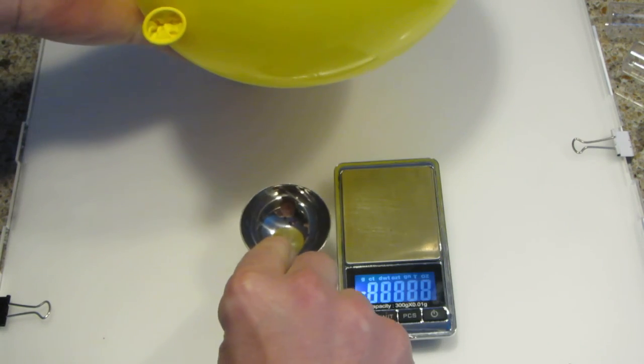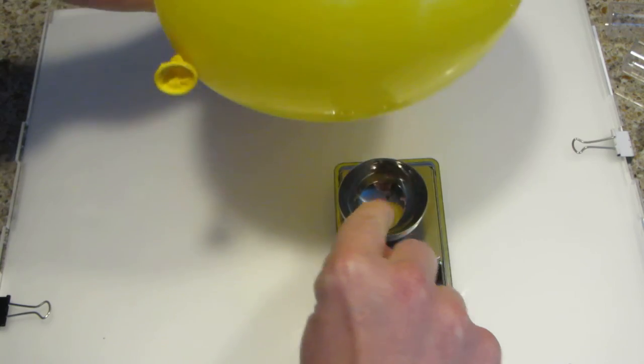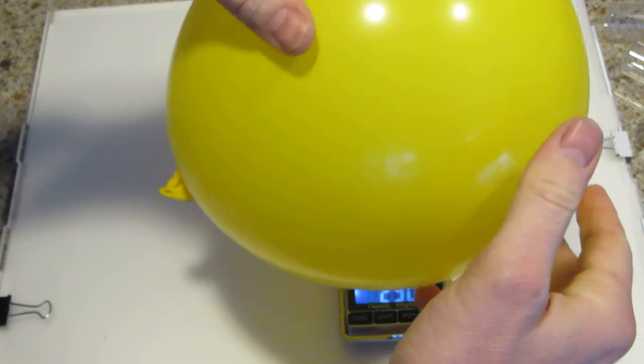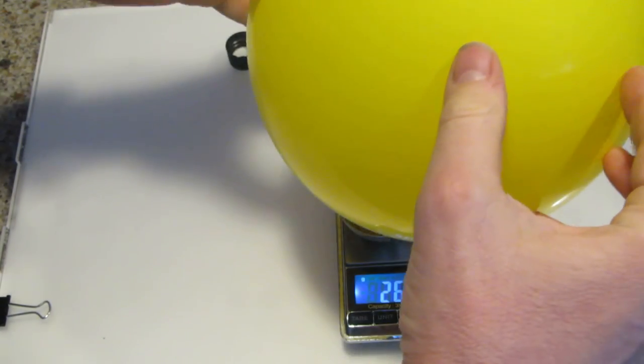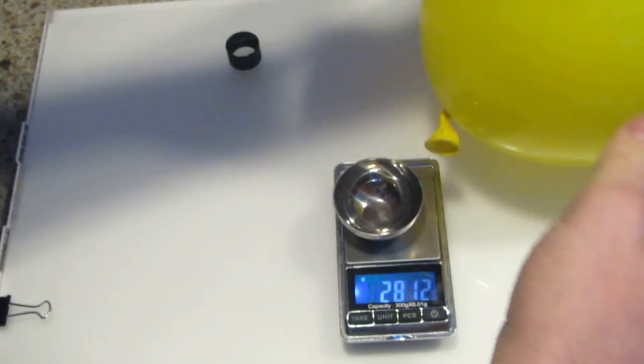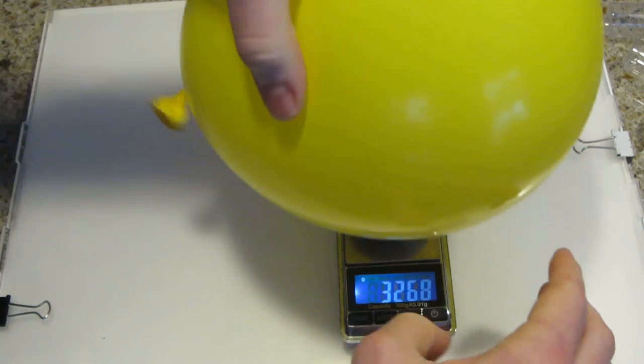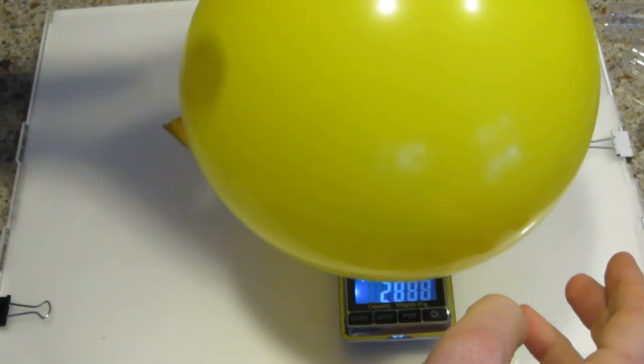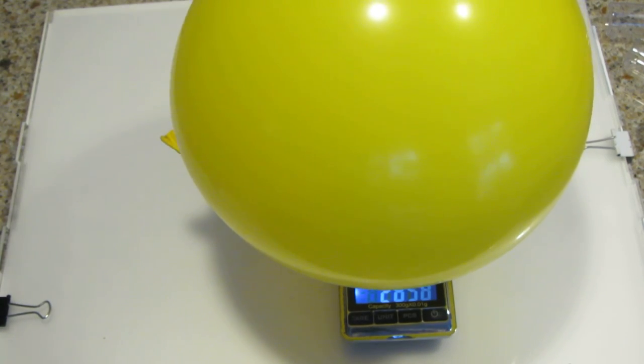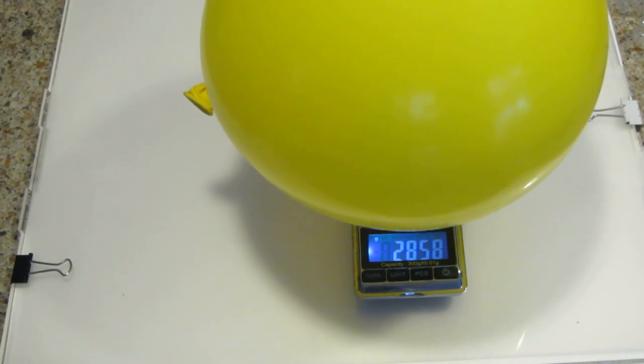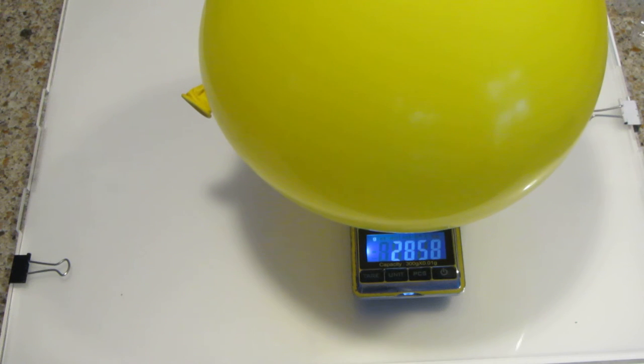Turning on the scale, putting the dish on, and then putting the balloon in the dish to make sure it doesn't roll away. So you'll take a look. The mass of the dish and the balloon filled with air is 28.61 grams.